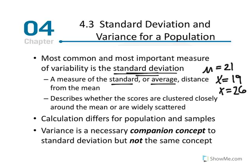Variance is a necessary companion concept to standard deviation, but not the same thing. Variance is the average of squared deviations, while standard deviation is the average of the deviations. We need to calculate variance first before we can arrive at the standard deviation — that's why it's described as a necessary but distinct concept.